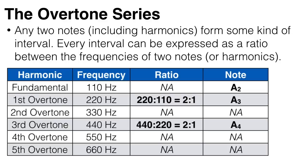Let me show you an example. Let's say we have a note where the fundamental frequency is 110 Hertz — that is, it vibrates back and forth 110 times per second, which is the note A. Now the first overtone will be 220 Hertz and will be exactly one octave above the fundamental. And 220 over 110 gives you a ratio of 2 to 1, and this ratio denotes an octave.